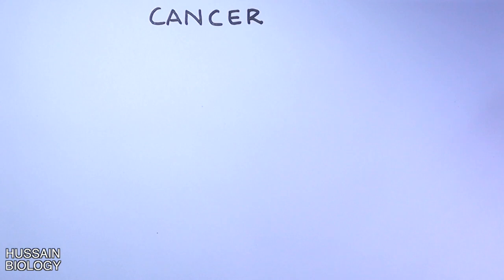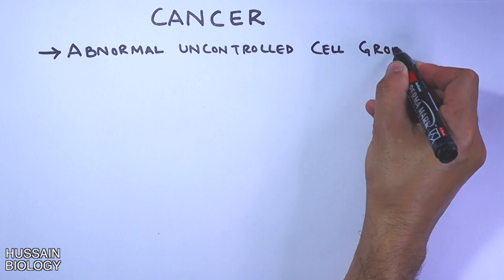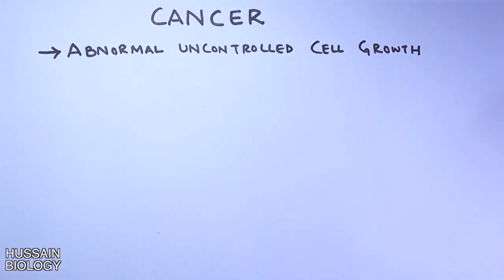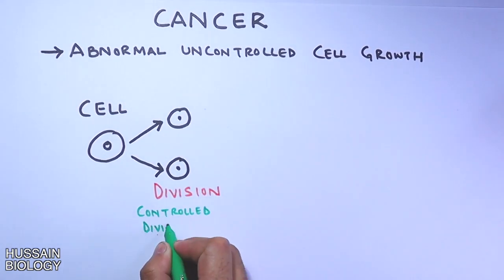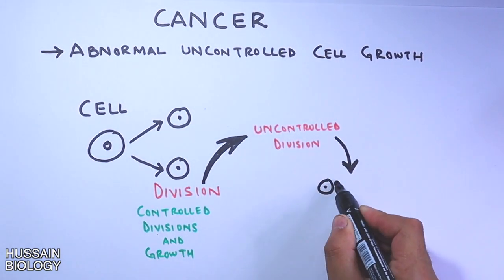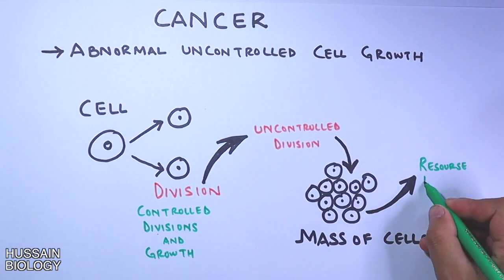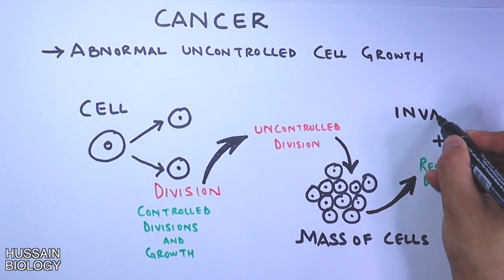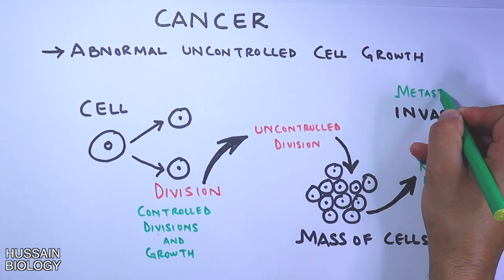In simple words, cancer is abnormal uncontrolled cell growth without any check. To put it diagrammatically, a cell divides through cell division in a controlled manner, but when division loses its control we get uncontrolled cell division, producing a mass of cells that eventually depletes resources and sometimes invades nearby tissues and organs — when it attains mobility, that is called metastasis.